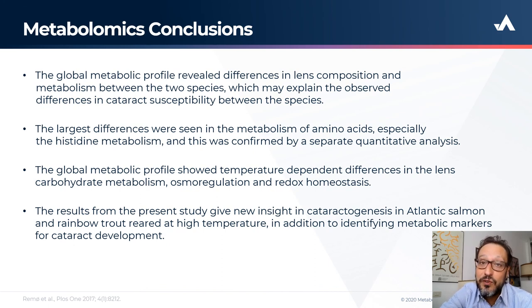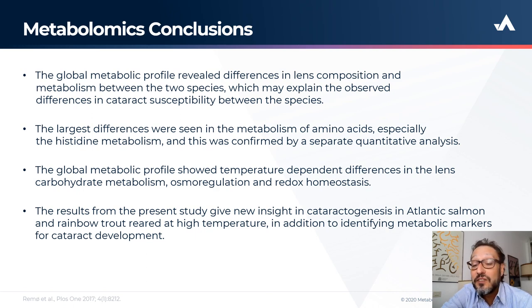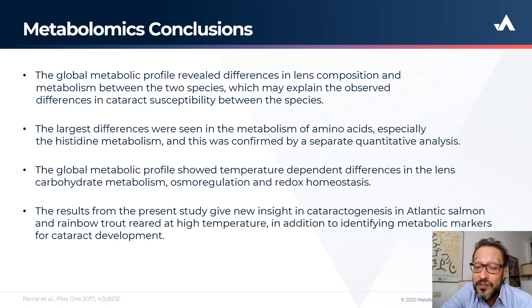In summary, Atlantic Salmon were found to be more susceptible to cataract development than Rainbow Trout under similar rearing conditions. Differences in histidine metabolism may partly explain this susceptibility difference between the two species. However, almost 50% of Rainbow Trout developed cataracts at both temperatures, suggesting other factors such as carbohydrate metabolism effects may be involved. Finally, while rearing temperature did not significantly increase cataract development during the experiment, the metabolic profile indicates that high temperatures do alter osmoregulatory ability, carbohydrate metabolism, and redox regulation in the lenses, which may result in a higher risk for cataract development. Thank you all for your attention. Please contact us for further information.